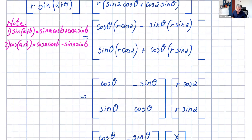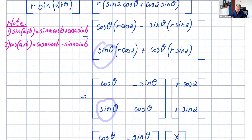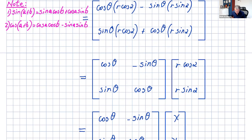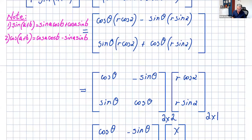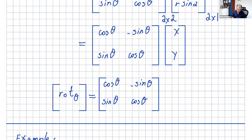We can express this as a matrix multiplication. We get the matrix with entries cosine theta, negative sine theta in the first row, and sine theta, cosine theta in the second row, multiplied by the column vector with entries r cosine alpha and r sine alpha. This gives us the same result. The dimensions check out: 2×2 times 2×1 gives a 2×1 matrix. Since r cosine alpha is just x and r sine alpha is just y, we substitute those.